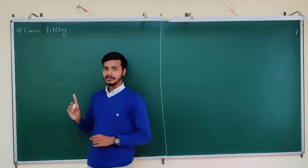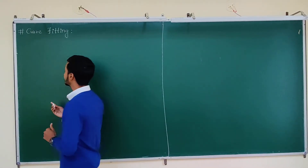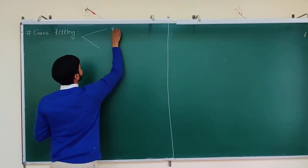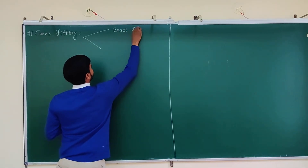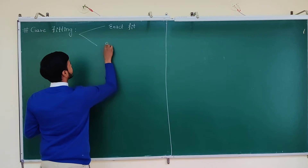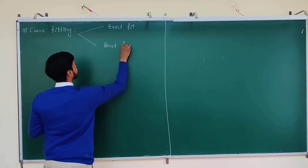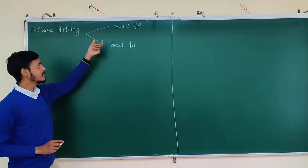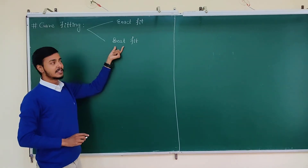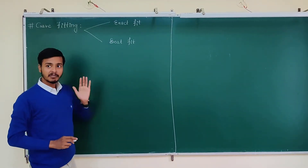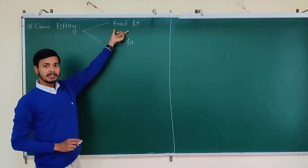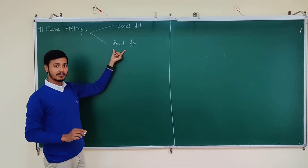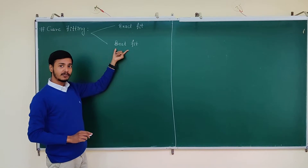Now there are two types of curve to be fitted: one is the exact fit and the second one is the best fit. The exact fit always passes through all the points and it is suitable for only a small number of parameters. Whereas the best fit does not pass through all the points and this fit is given for a large number of data.